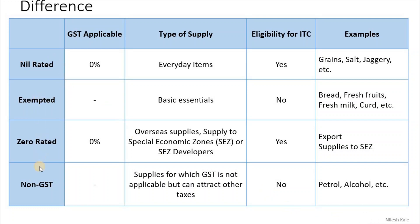Now look at this comparison table. Nil rated — is GST applicable? Yes, at zero percent rate. Type of supply? Everyday items. Do you get ITC input tax credit? Yes. Examples are grain, salt, sugar, rice, wheat.